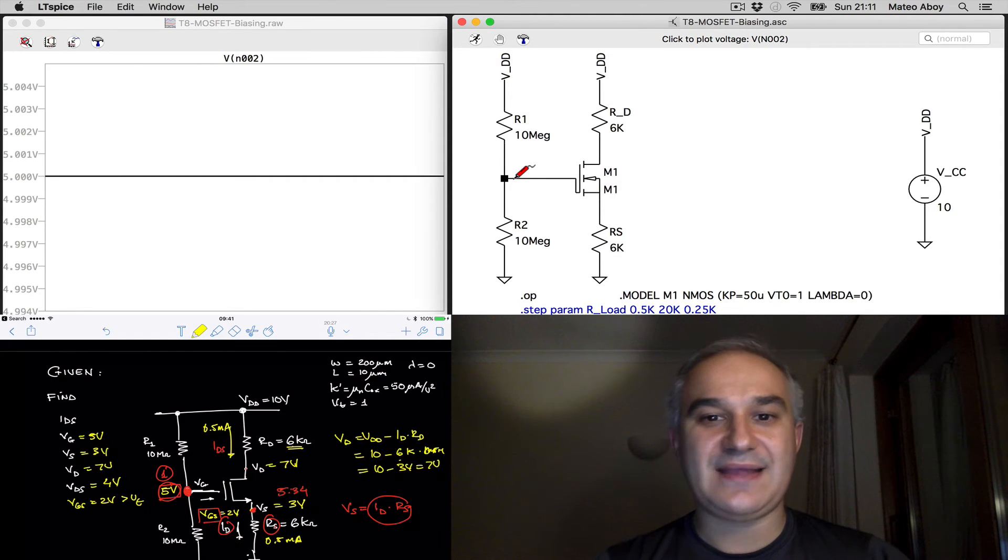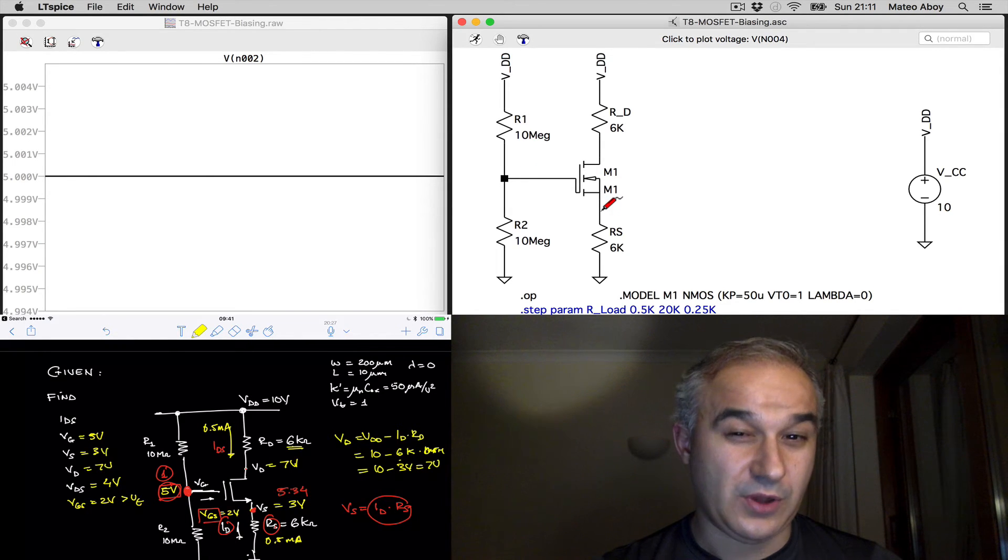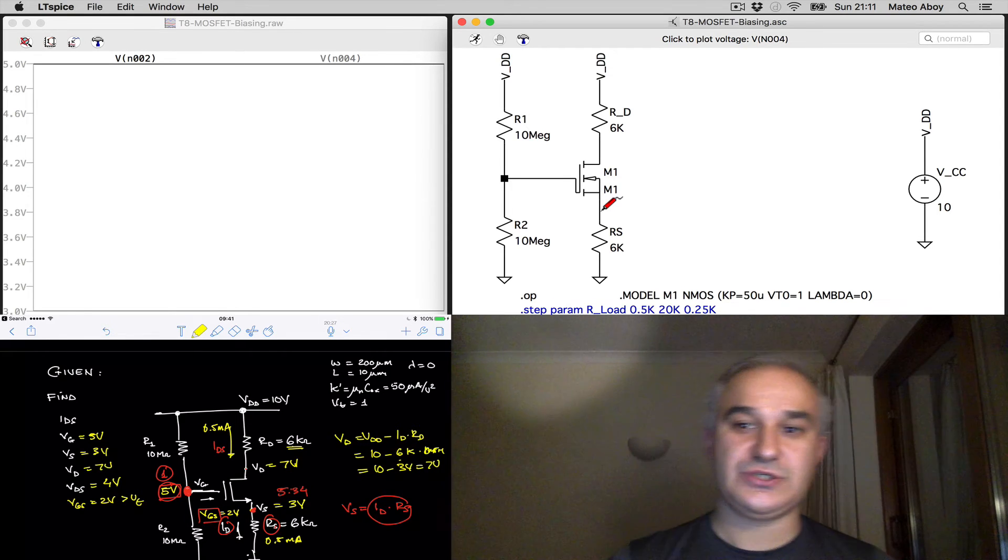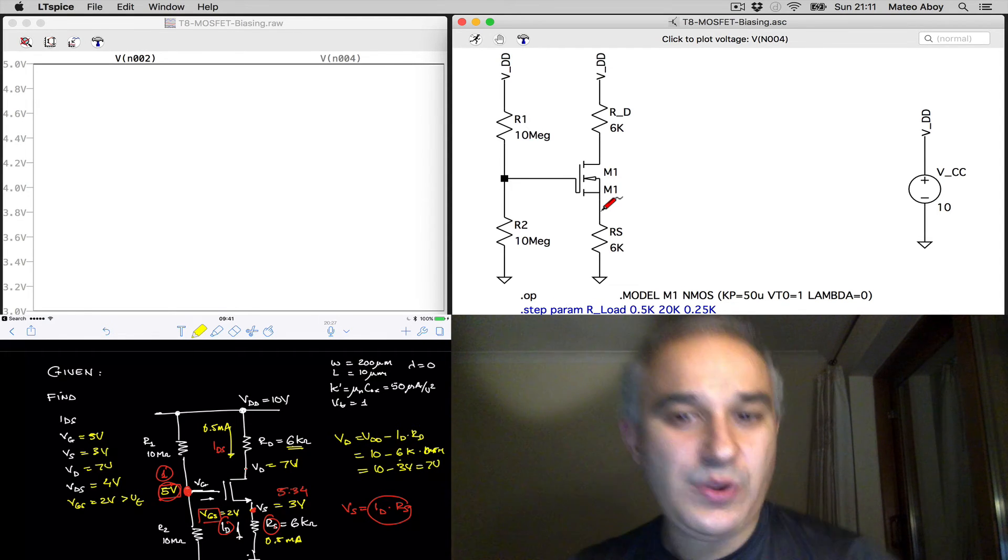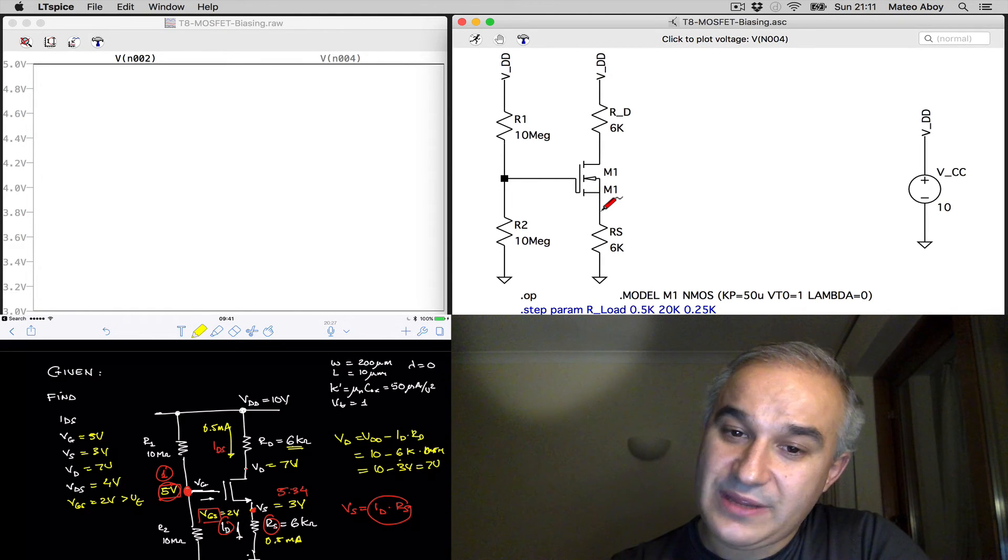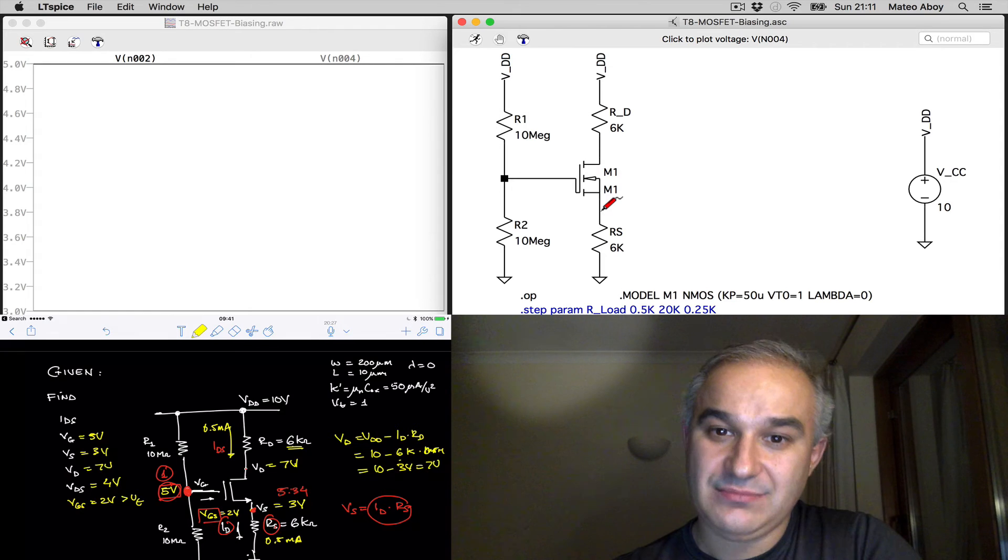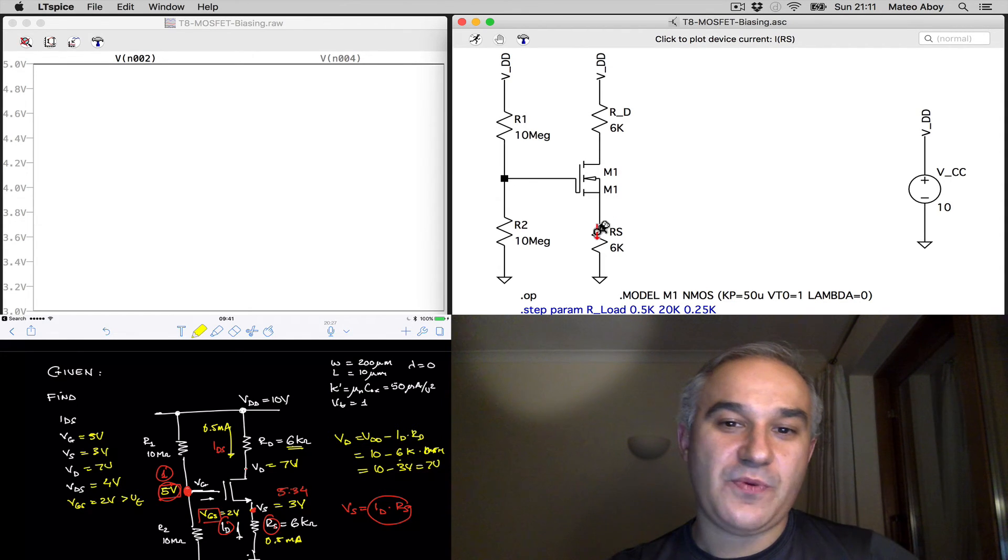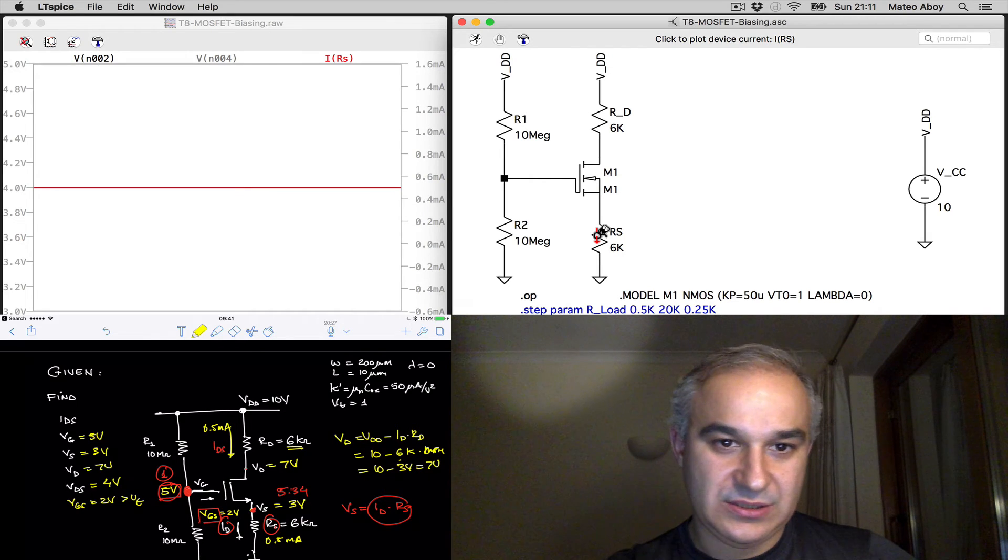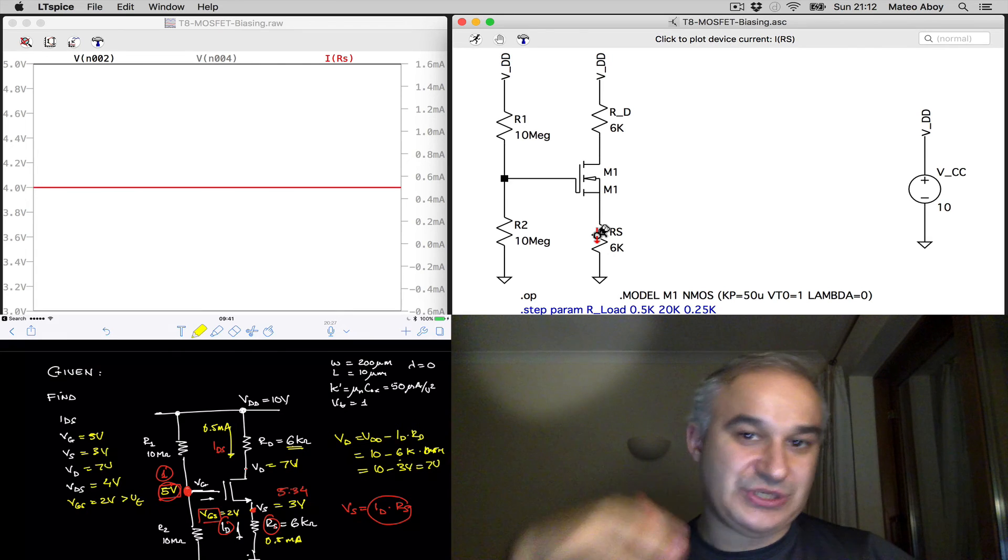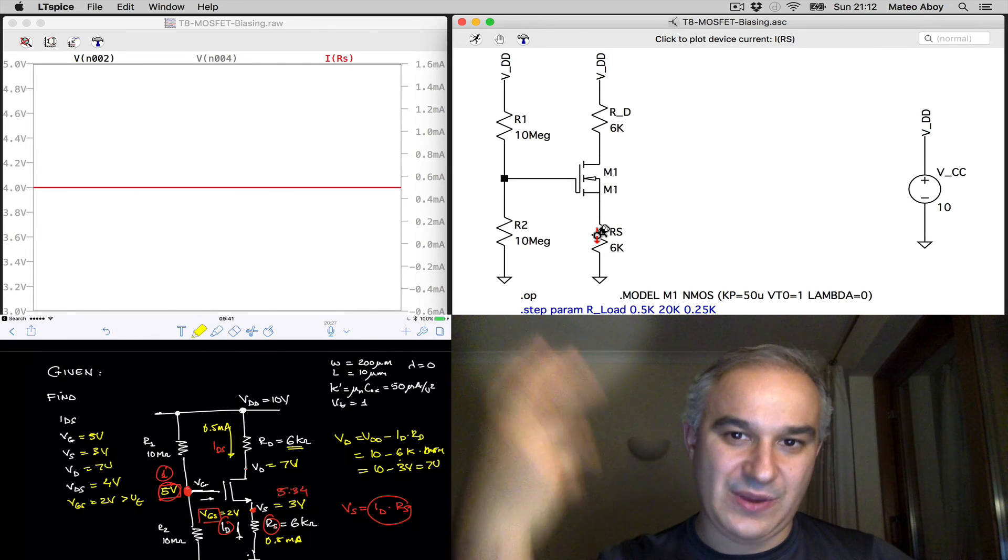We expect the voltage at the source to be 3 volts for a voltage gate to source of 2 volts. And with that, if the voltage at the source is 3 volts, and we divide by 6k, 3 divided by 6k, we get 0.5 milliamps. So, half a milliamp for the current at the source, which is also the current at the drain, or the current drain to source.